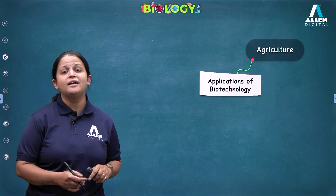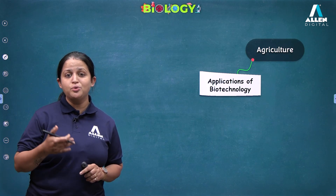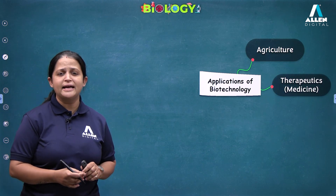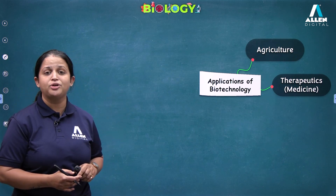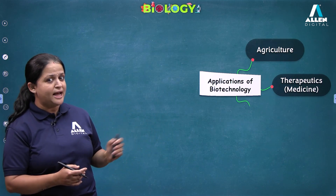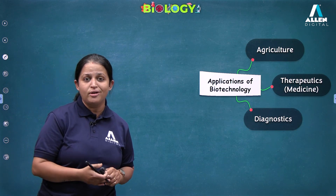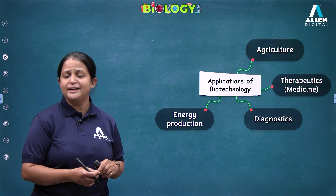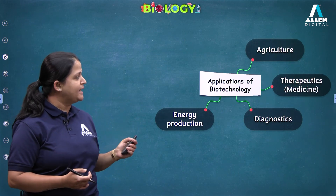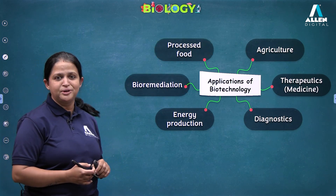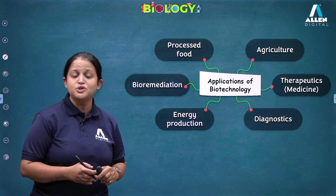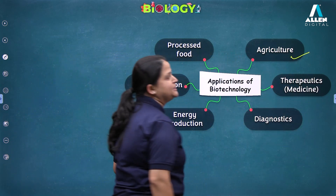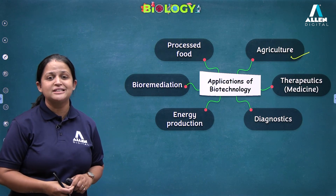The first sector is agriculture — how biotechnology can be used in improving crop yields. Along with that, we can see other various sectors like applications of biotechnology in medicine as well as in diagnostics. By using biotechnology, we can diagnose certain diseases, and this field can also be used in energy production, bioremediation, and the production of processed food items. But today I am going to concentrate on the application of biotechnology in agriculture.